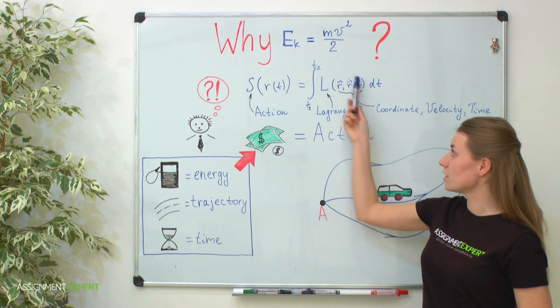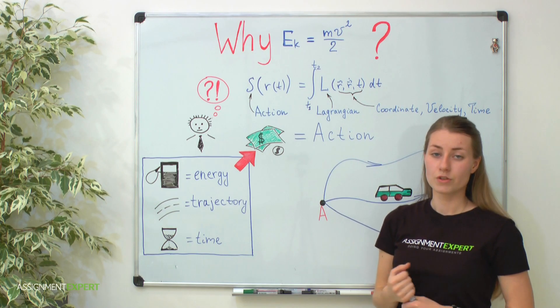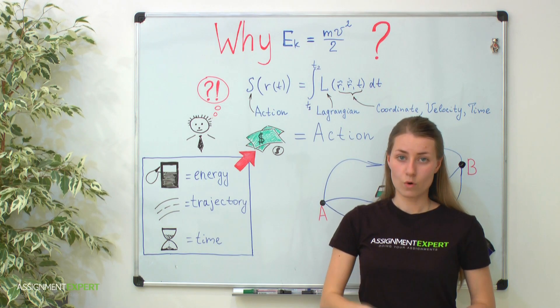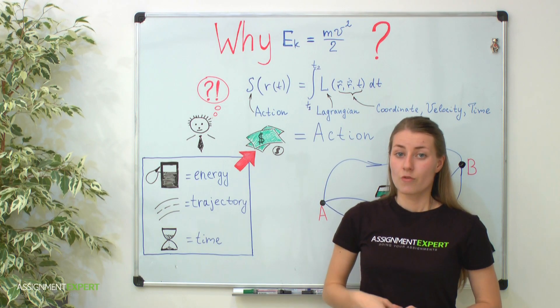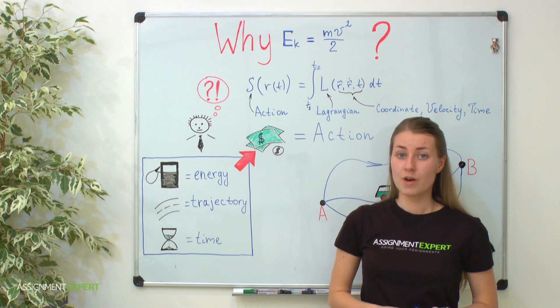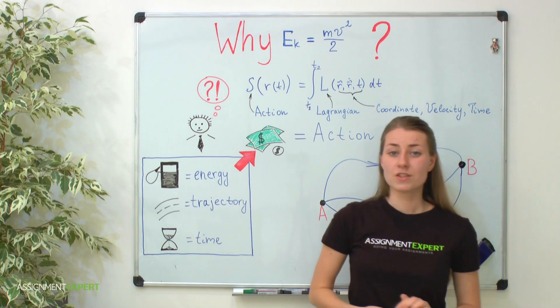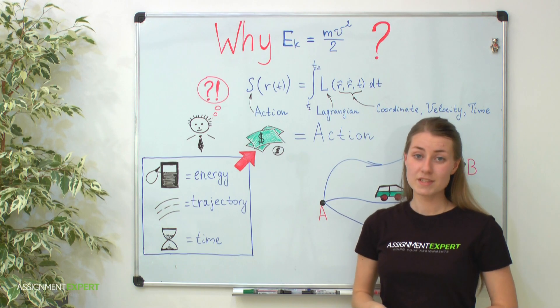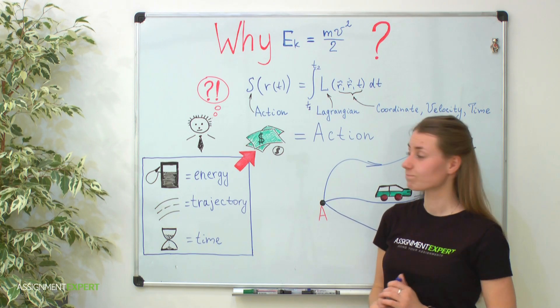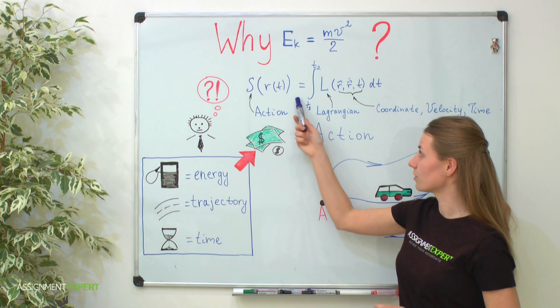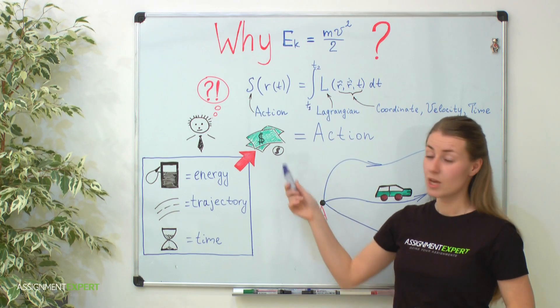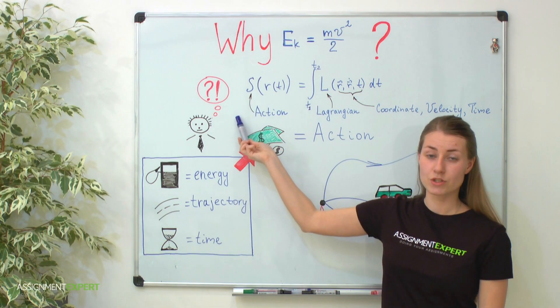Under the integral we have the function L which is called Lagrangian. Lagrangian implicitly depends on the energy of the system. Lagrangian has three arguments: its coordinates, velocities, and time. The standard physical set for describing any classical system. If the Lagrange function is known, you know all the information about your physical system. Moreover, with the help of it all the conservation laws can be found. For example, you can find the conservation of energy, momentum, and angular momentum. Now let's talk about action.